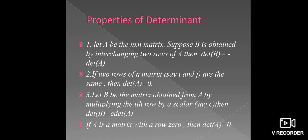Third, let B be the matrix obtained from A by multiplying the ith row by a scalar, say c, then det(B) = c·det(A).